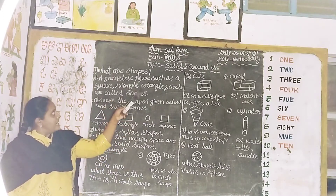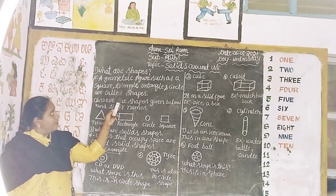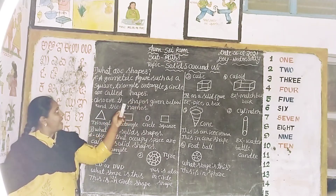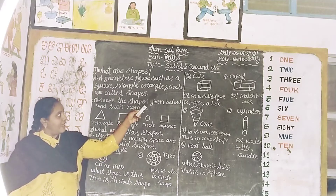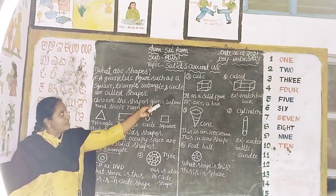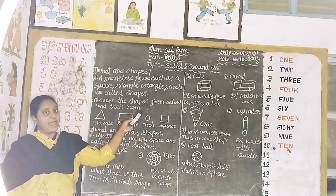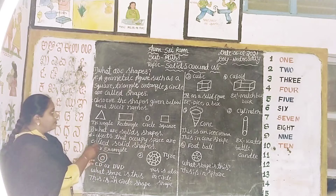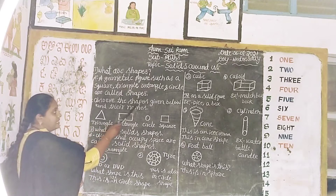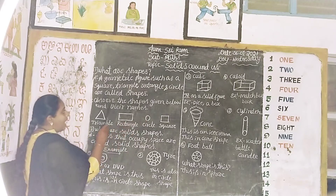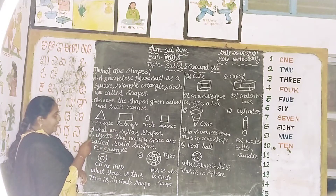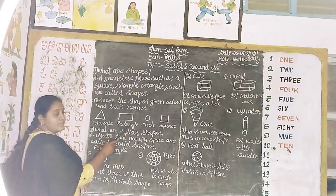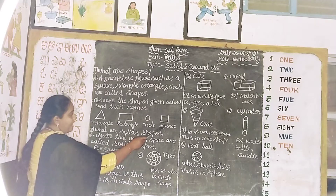What are shapes? A geometric figure such as a square, triangle, rectangle, and circle are called shapes. Observe the shapes given below and their names: triangle, rectangle, circle, square.